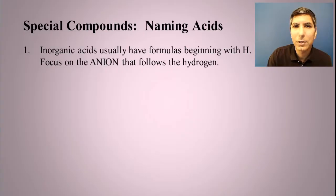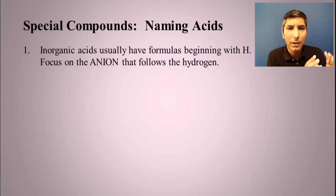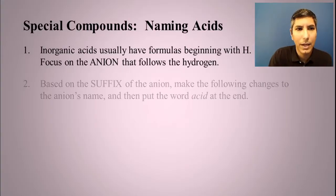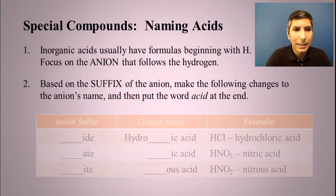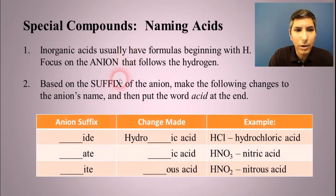What you want to do is focus on the anion that follows that hydrogen. In the formula, you'll see an H, the hydrogen, and then something else, some anion like a Cl or a ClO3 or something like that. Focus on the anion there at the end of the acid and look at its name. Based on the suffix of that anion, you're going to change that suffix to something else, and then you'll put the word acid at the end.